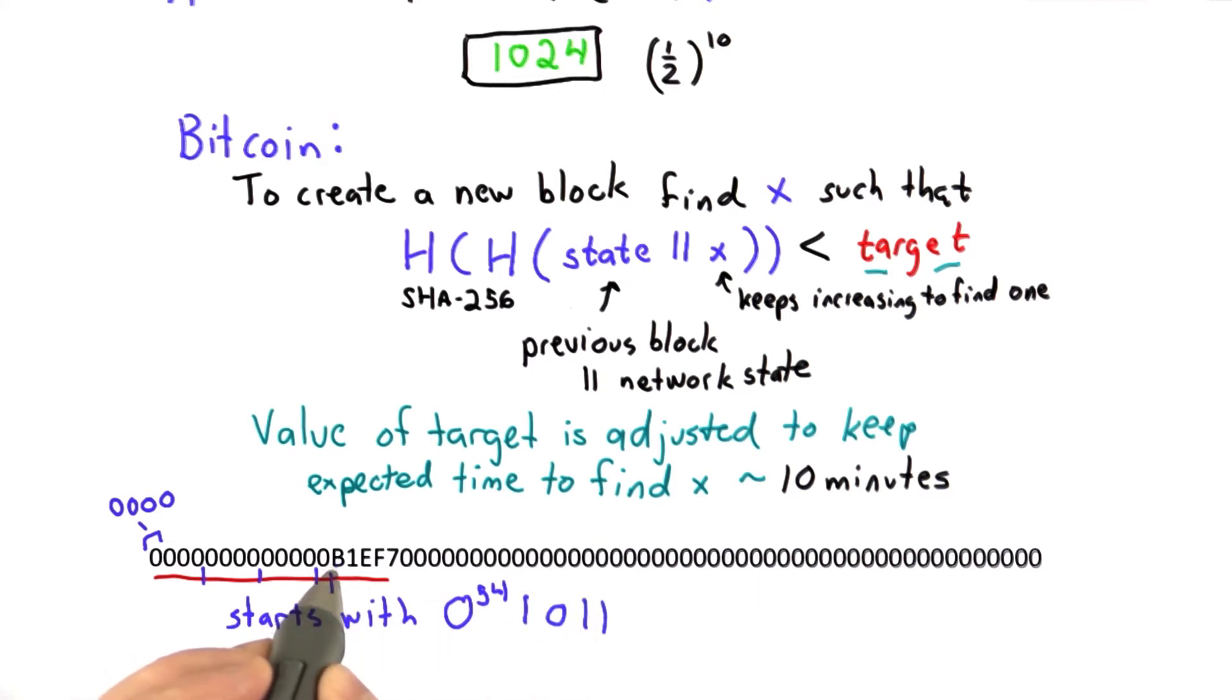Followed by something less than 1011 and more. So if you found a value that hashed where the results started with 55 zeros or started with 54 zeros, a 1, 0 and a 0, well then you'd be golden. You'd be able to create the next block.